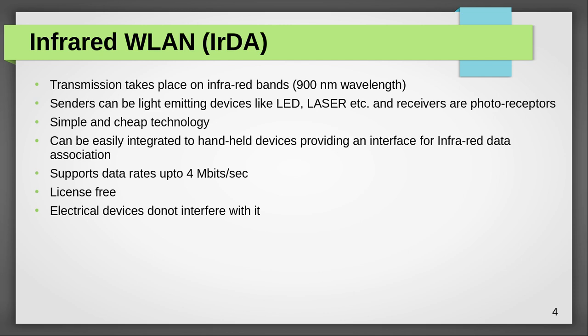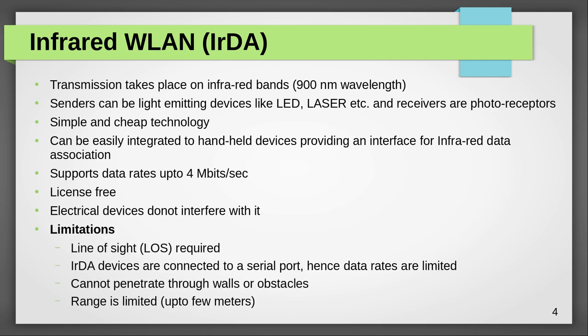There are certain limitations of infrared wireless LAN. The first one is the line-of-sight requirement — since infrared is a high-frequency component of the electromagnetic spectrum, it requires a directional antenna and hence line of sight. The infrared data association devices are connected to a serial port, so data rates are limited. They cannot penetrate through walls or obstacles, and the range is limited compared to the radio-based wireless LAN.